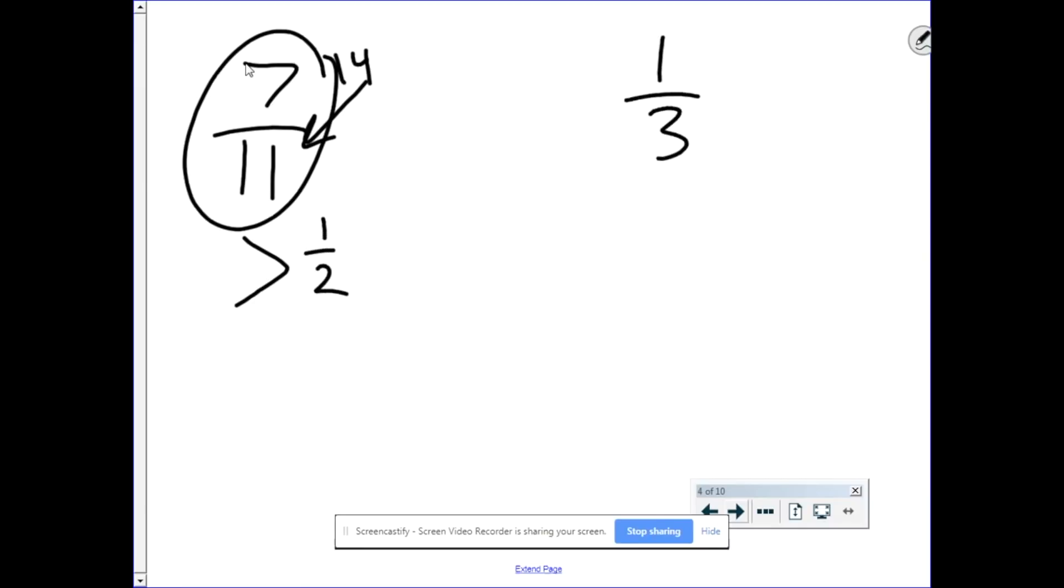And then over here, one-third. Well, if we double one, we get two. And we know that two fits into three. It's less than three. So therefore, one-third is less than half. And lastly, three-sixths. If we double three, we get six. Those are equal. So this must be equal to one-half.